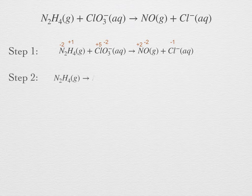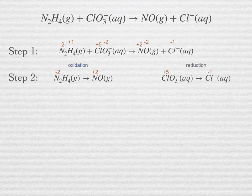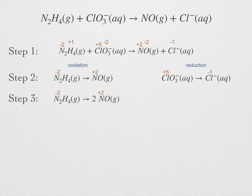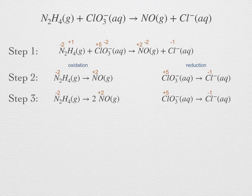Step 2: separate the overall reaction equation into the two half reactions. Nitrogen is being oxidized, going from −2 to +2; chlorine is being reduced, going from +5 to −1. The two half reactions are: hydrazine → NO, and chlorate → chloride. Step 3: balance by inspection the atoms that are changing oxidation state — in this case the N and Cl atoms. We need to multiply NO by 2 to balance the nitrogens. The chlorine is already in balance, so nothing changes in the reduction half reaction.